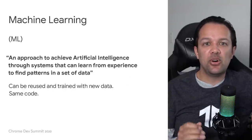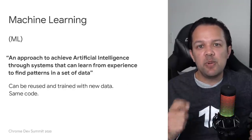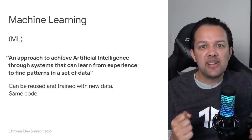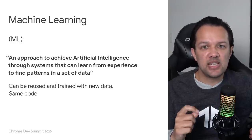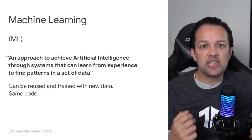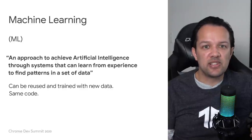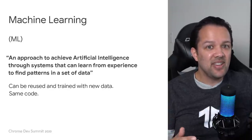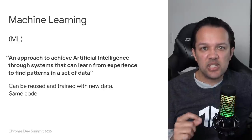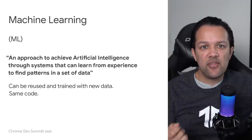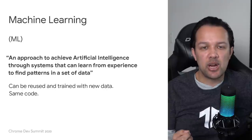Next up, we have machine learning, or ML for short. This is at the implementation level — the actual program we can create that learns from training data to find patterns in that data. It can then use this knowledge to classify previously unseen examples of the same class in the future. Machine learning is an approach to achieve AI, and the key thing is that these systems, once programmed, can be reused. If I create an ML system that recognizes cats, I can use the same code without modification to then recognize dogs, just by feeding it different training images. This is very powerful and a big difference from how we used to program.